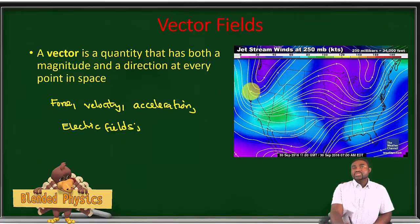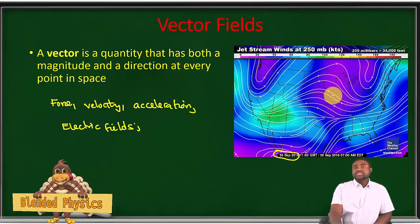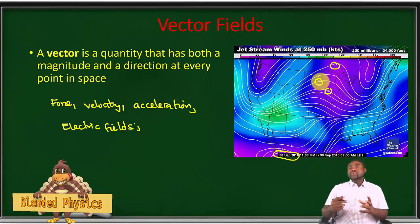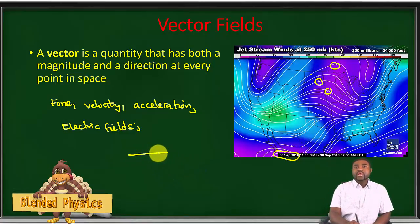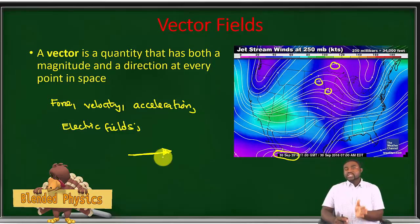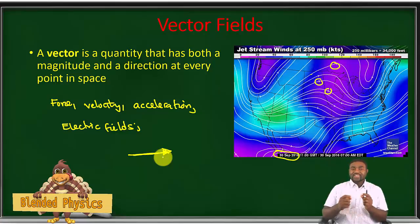If you look at the diagram on the screen, this is a jet stream diagram showing the wind direction across the United States taken in September 2016. The jet streams are represented by arrows. The arrows indicate the direction of the jet stream, and the length of the line indicates the magnitude or speed of the jet streams. It is important to understand that a vector quantity is represented by an arrow, where the direction of the arrow represents the direction of the field at that given point, and the length of the arrow is proportional to the magnitude of that vector quantity.